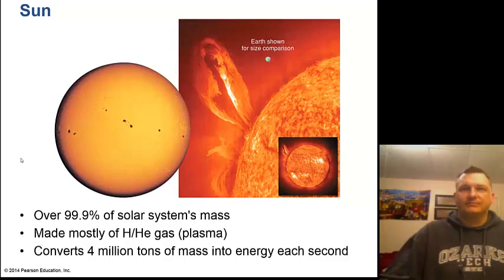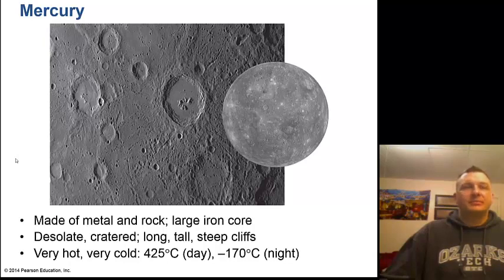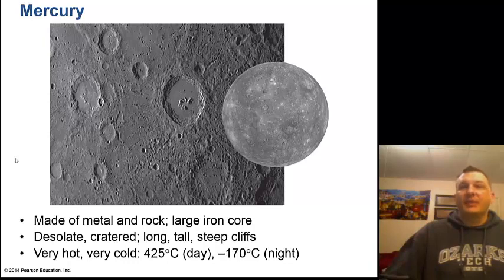Next up is Mercury, made of metal and rock with a large iron core. It's very desolate and heavily cratered, with long steep cliffs called scarps. It has no atmosphere, so on the dayside it can reach 425 degrees Celsius, while on the night side it drops to minus 170 degrees Celsius.